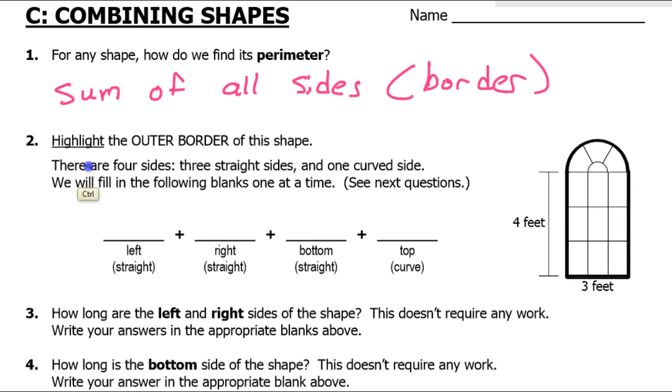The outer border has four sides to it. It has the left straight side, which is four feet. It has the right straight side, which will also be four feet. The bottom straight side is three feet. The only part that takes any thought is the top curve, this piece right here.